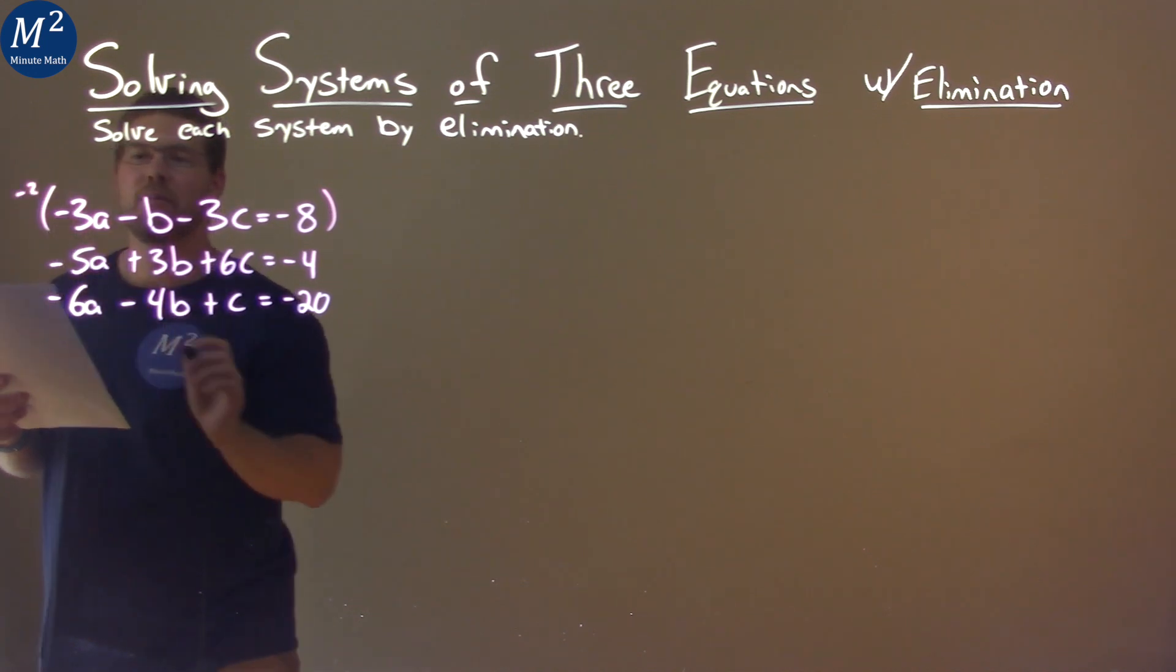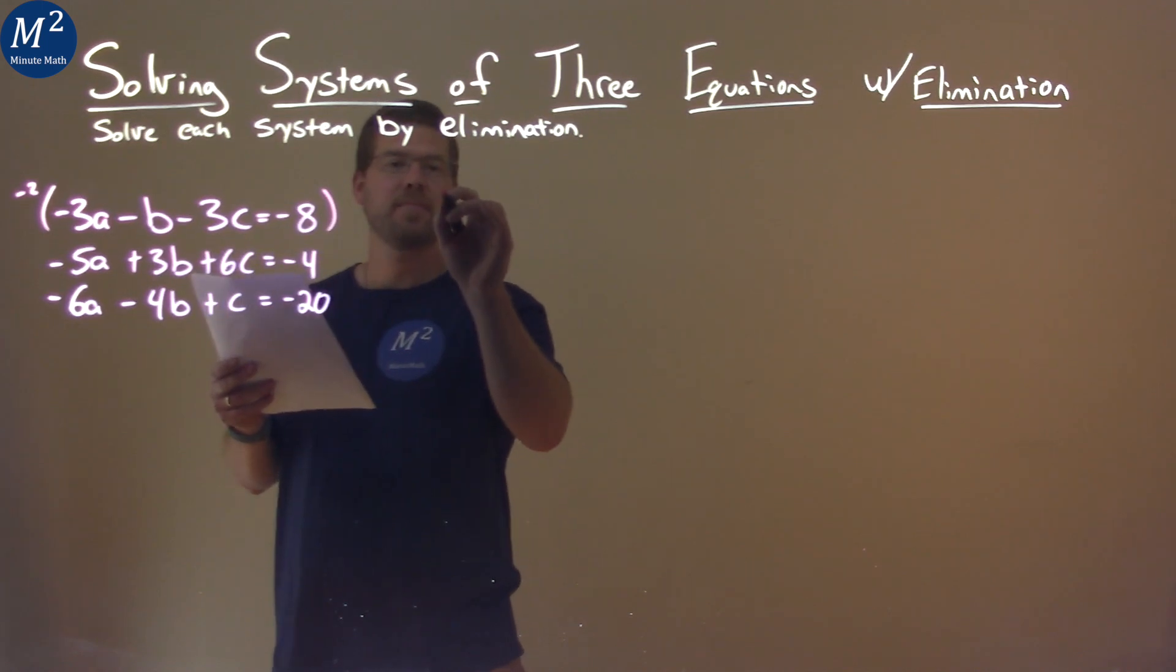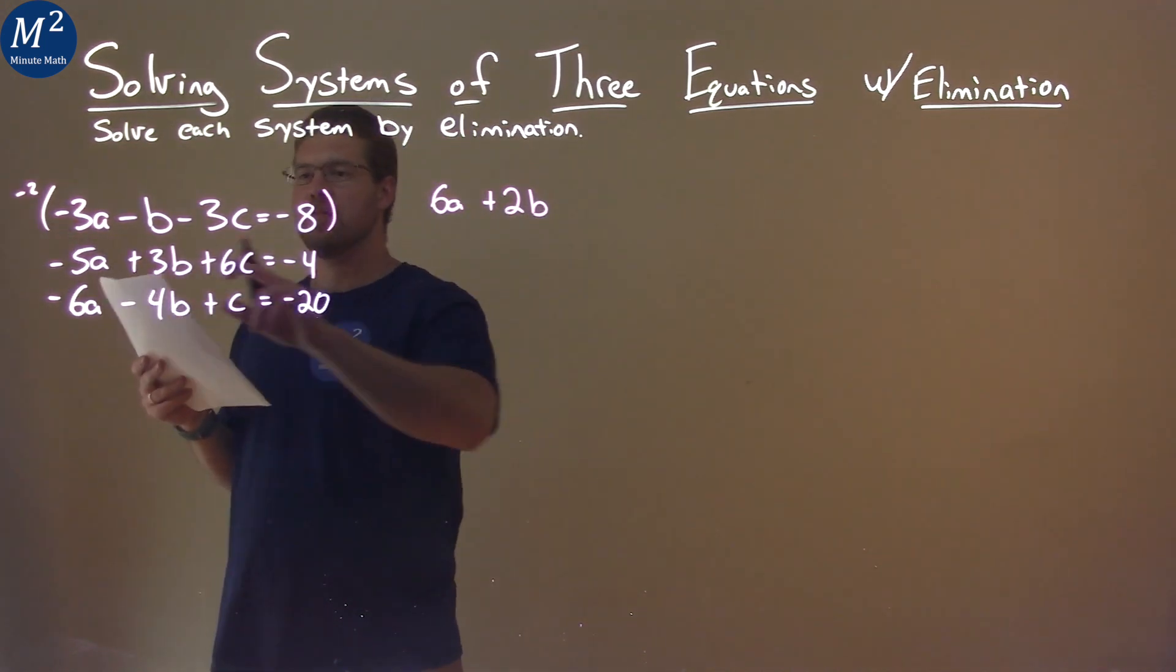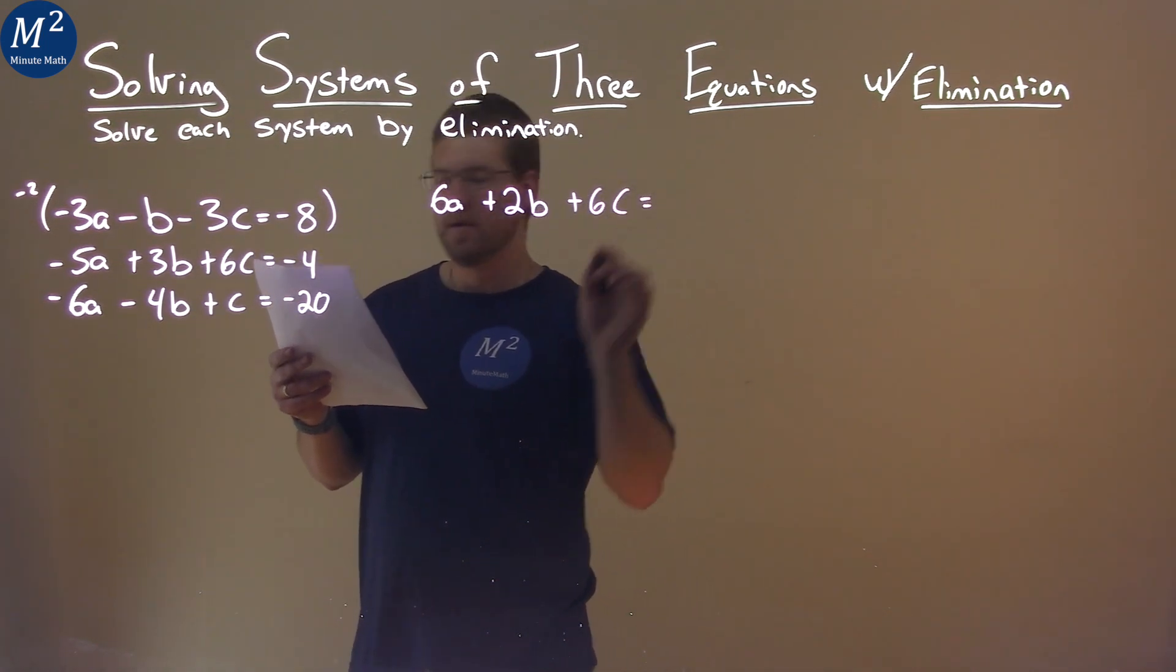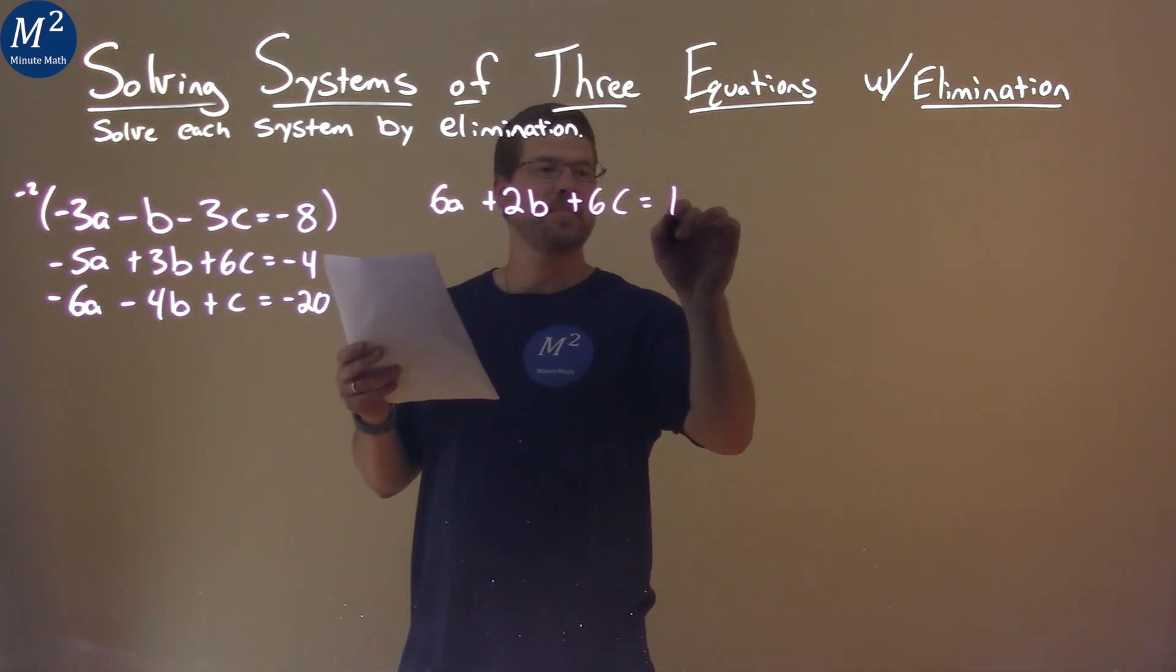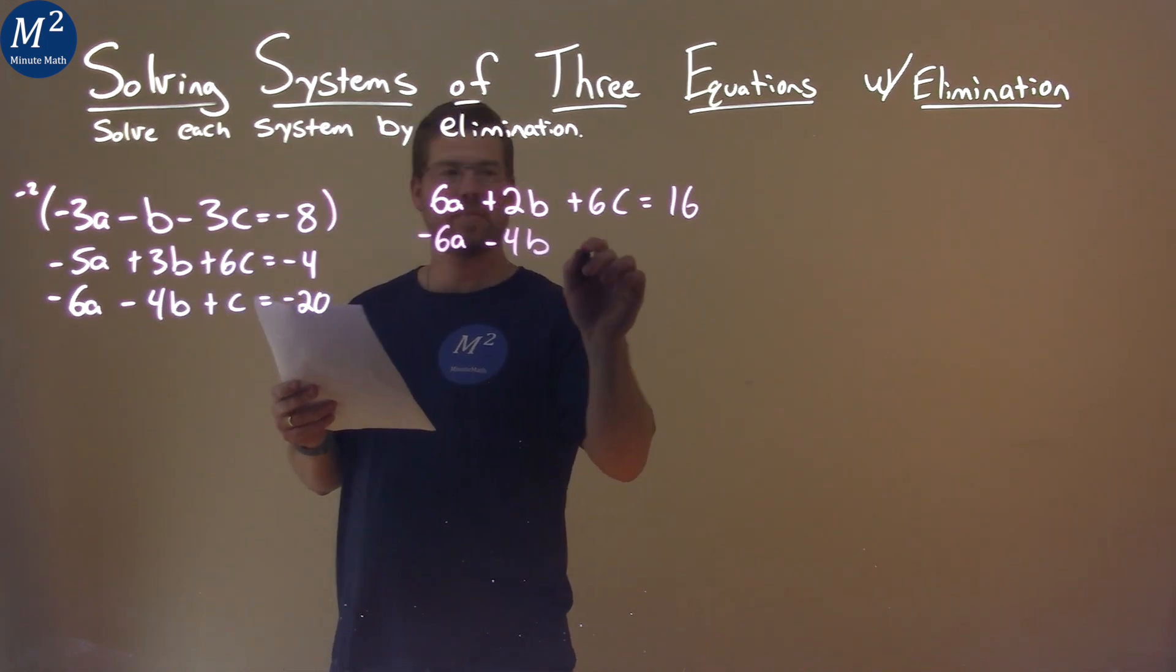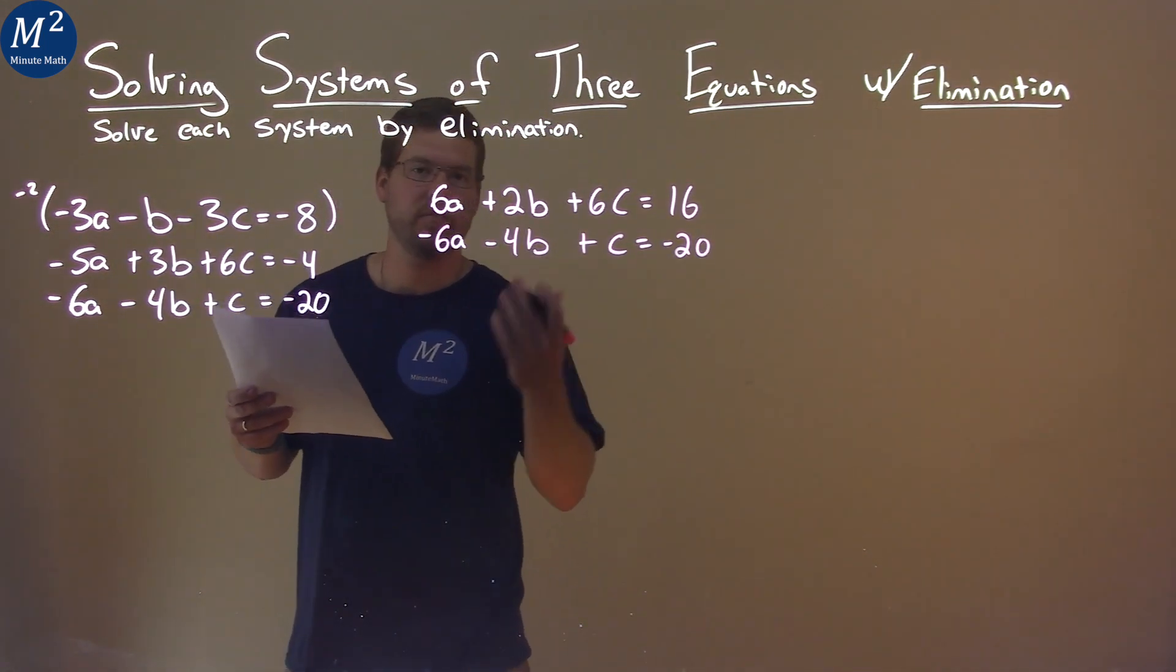So I multiply the first one by negative 2, and we get negative 2 times negative 3a is 6a, negative 2 times negative b is positive 2b, negative 2 times negative 3c is positive 6c, and negative 2 times negative 8 is positive 16. We bring down the third equation, negative 6a minus 4b plus c equals negative 20. And now we want to add these two equations.